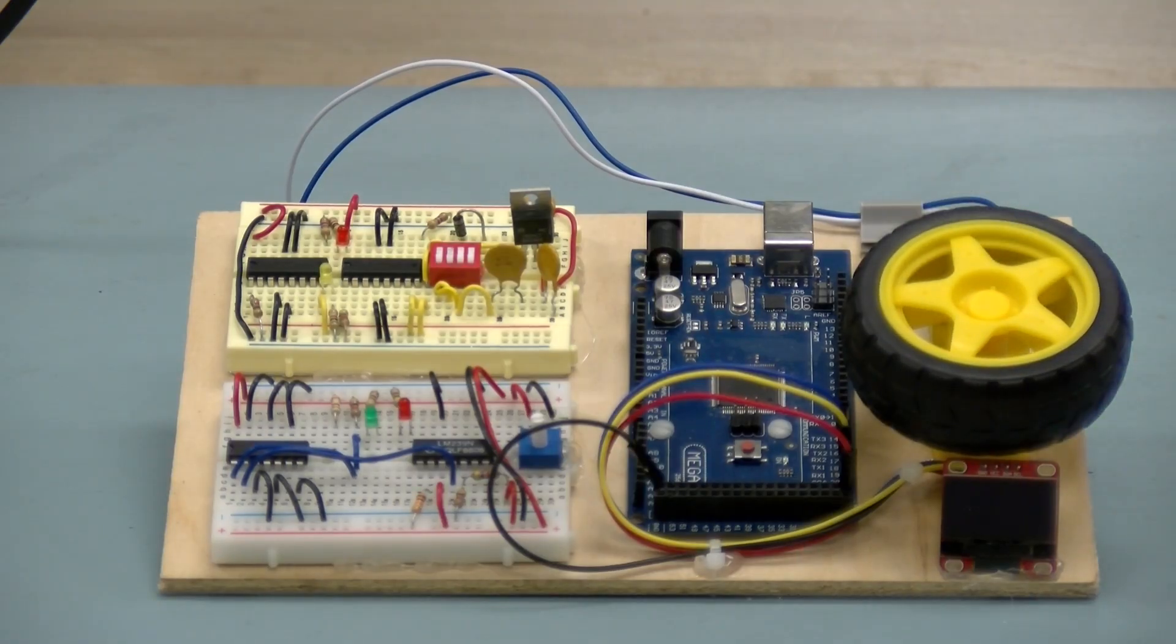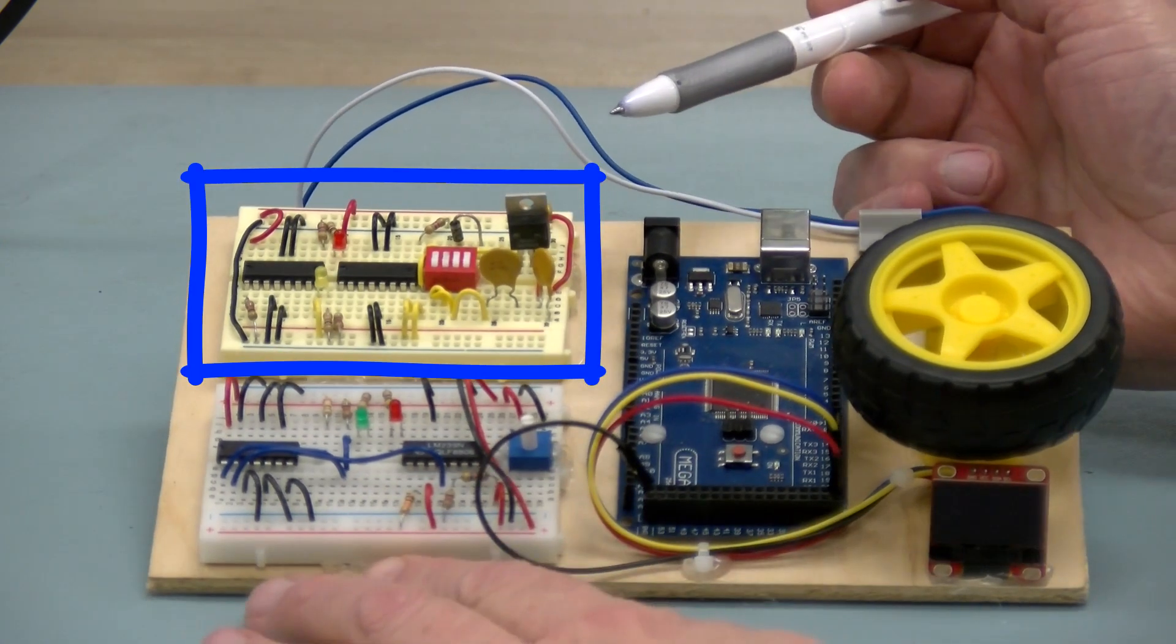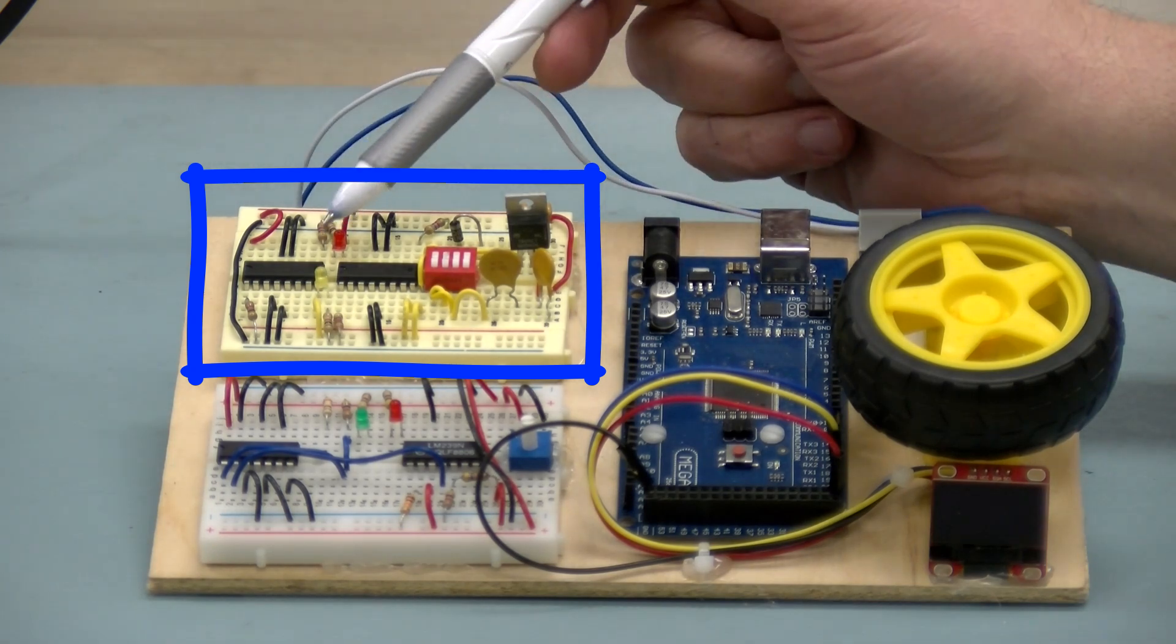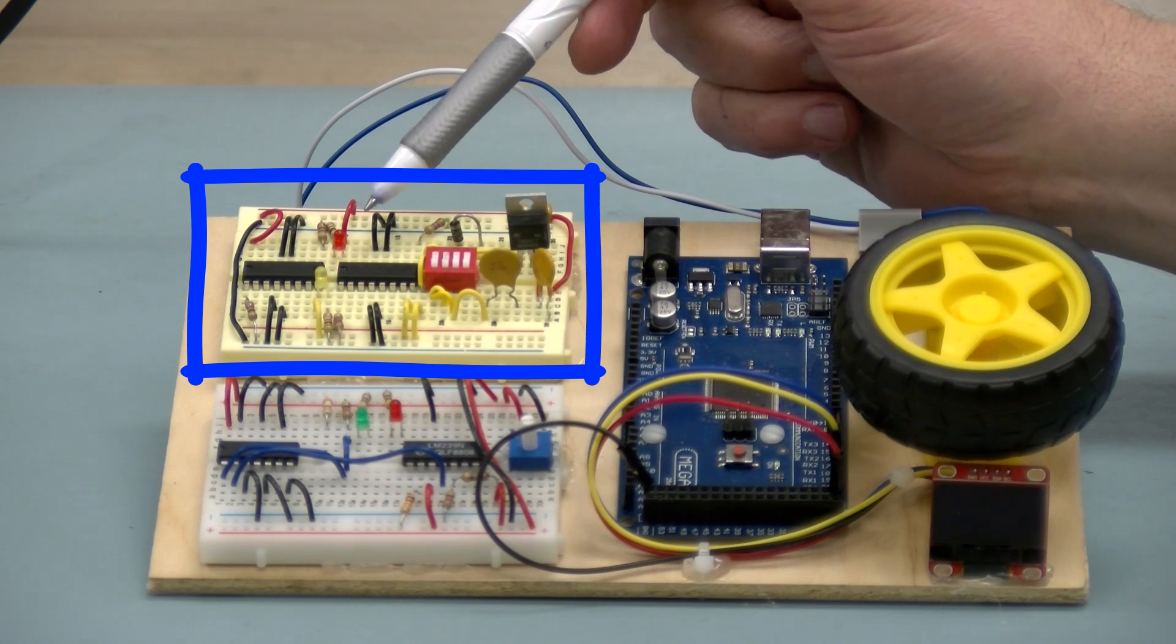Hello, we're going to look at the Lab 2 circuitry. This section in blue is the part that we're going to look at in more detail. The bottom part is for another lab. There are two L293 motor drivers.